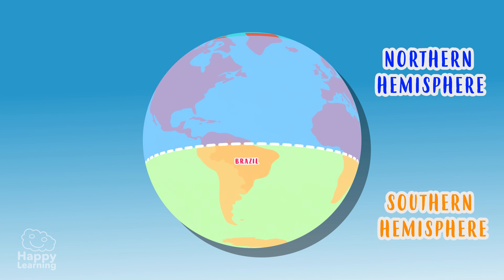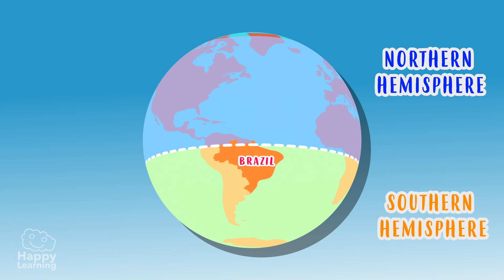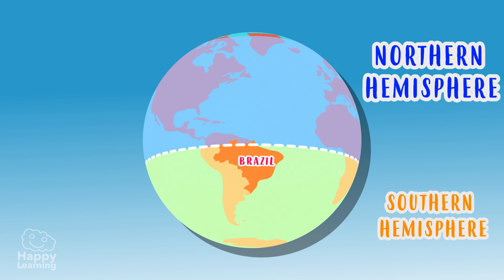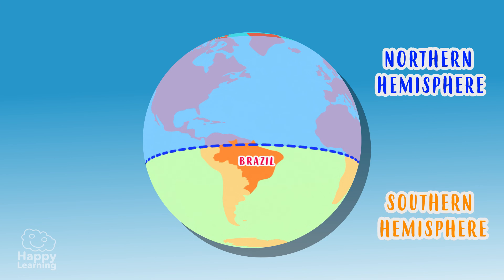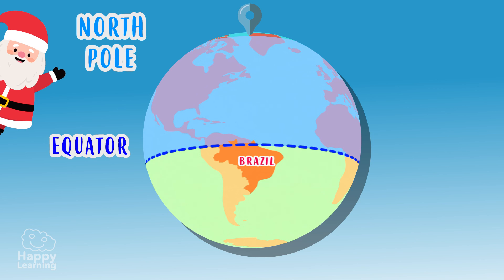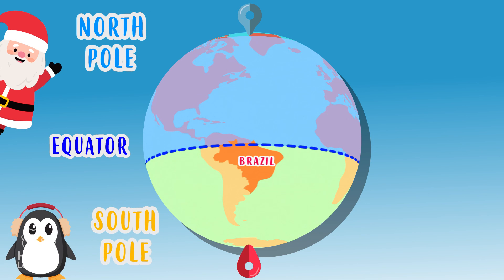Where would you place Brazil? Very good — a small part in the northern hemisphere and a larger part in the southern hemisphere. We call the imaginary line that we draw to divide the Earth into two halves the equator. Sounds familiar, doesn't it? The equator line also allows us to locate the poles — the north pole is at the top and the south pole is at the bottom. Easy, isn't it?